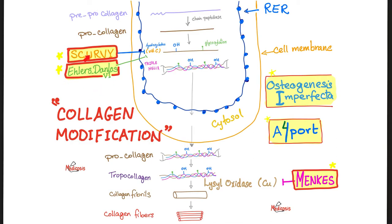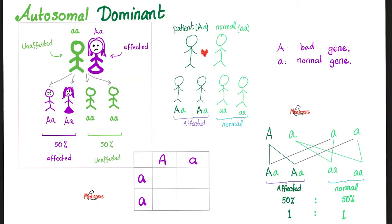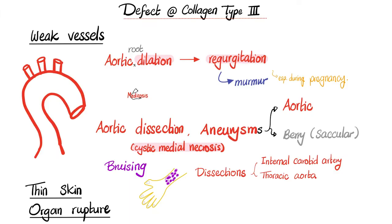As you recall, Ehlers-Danlos is a problem in collagen. Many cases of Ehlers-Danlos syndrome are autosomal dominant in inheritance; others are autosomal recessive. Some patients have a defect in collagen type 3, which is in vessels, and they have vessel problems such as aortic root dilatation with aortic regurgitation, murmur, aortic dissection, aortic aneurysms, aneurysms in the brain, bruising, dissections, thin skin, organ rupture, uterine prolapse, and much more.